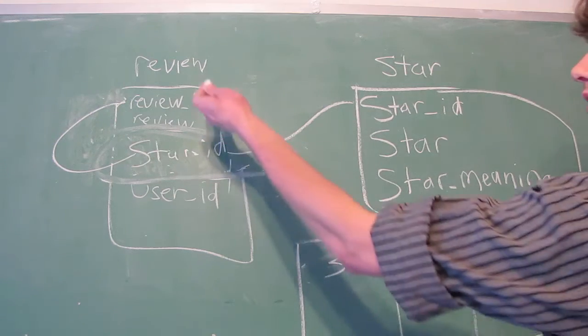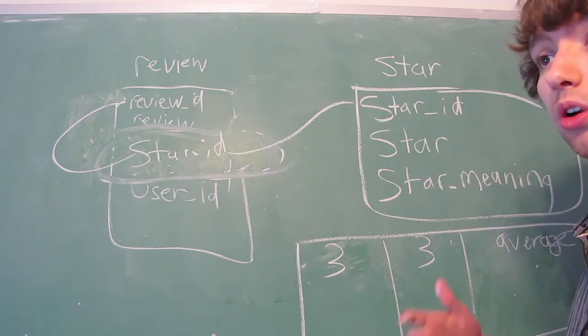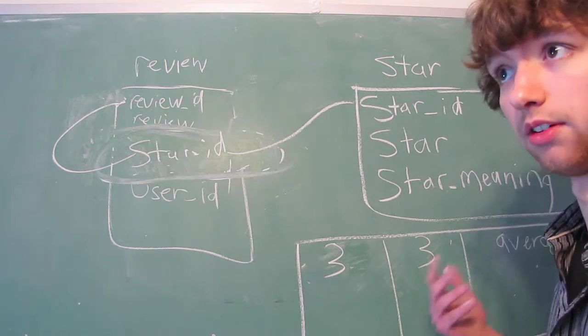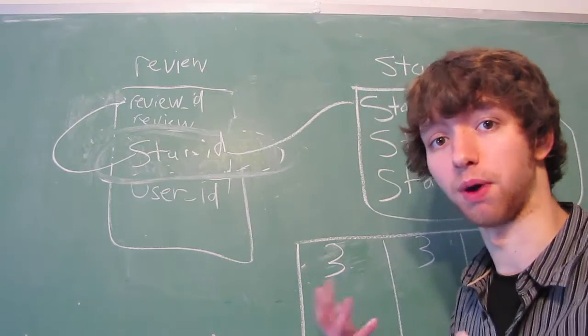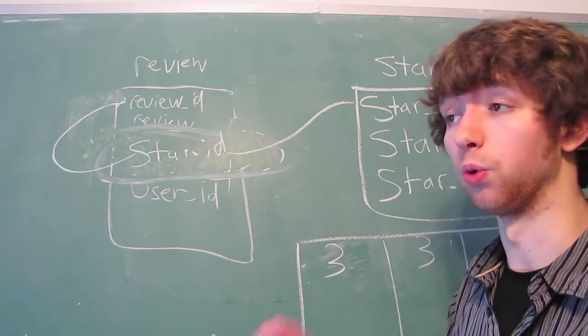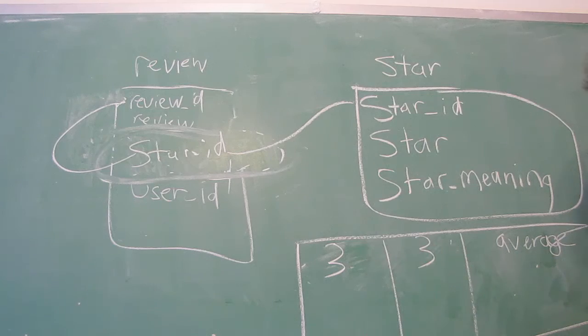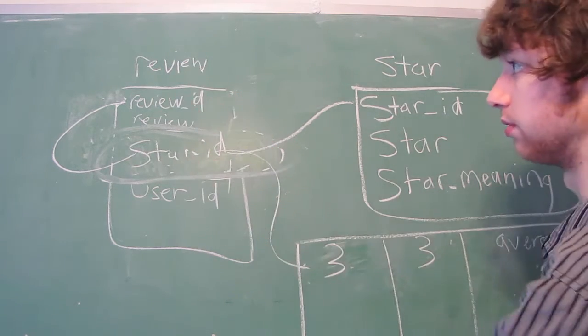So over here, we could have a star ID of one, two, three, four, five, or zero through nine. It doesn't really matter what the ID is because the ID is just a number used by the database and has no real-world value.